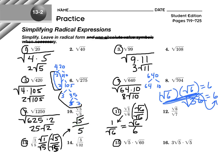Let's do a couple of product problems. Square root of 5 times square root of 60. 5 times 60 is 300, so I'm going to put it back together first. Square root of 300 — the perfect square factor of 300 is 100. 100 times 3 gives you 300. Square root of 100 is 10, can't take the square root of 3 — so the answer is 10 root 3.